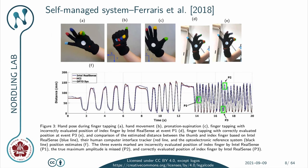Ferraris et al. has published a number of works related to assessment of UPDRS tests using computer vision methods. One of the more interesting ones is their self-managed system published in 2018. Here you can see an illustration of how they have created a glove with colored fingers in order to make it easier to identify the fingers using computer vision methods.